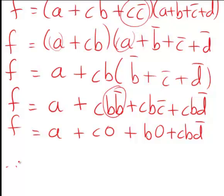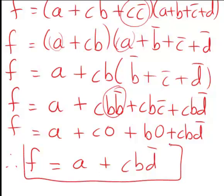And since these terms here, c times zero and b times zero, are just going to be zero, we're left with f equals a plus zero plus zero plus c b d bar, which hence simplifies finally to give an expression of f equal to a plus c b d bar.